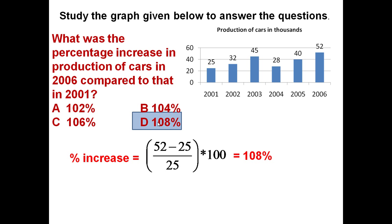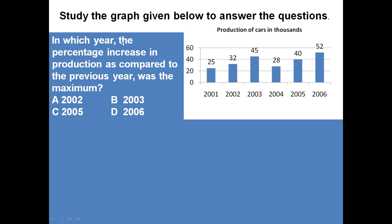Using the same graph there may be more than one question. So if we just attempt another question: in which year the percentage increase in production as compared to the previous year was the maximum? If you see production is increasing 25 to 32, 32 to 45, 28 to 40, 40 to 52. So in which year this production was maximum as compared to the previous year production?